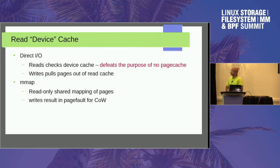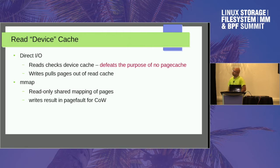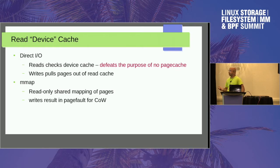Dave Chenna keeps setting me straight here: when you're doing a direct IO read, you actually have to go to the disk. One reason is shared storage — you actually need to read what the other machine wrote rather than what you've got in cache. The other is that some workloads do this to save CPU — rather than have the CPU do a mem copy, they want the DMA to happen because CPU is more important than bus bandwidth.